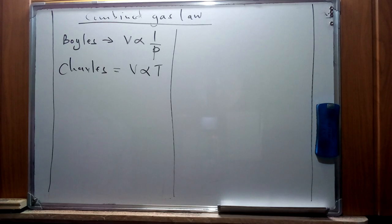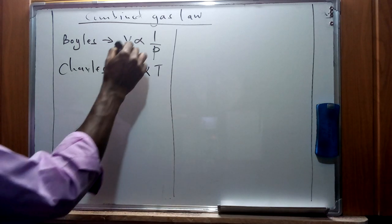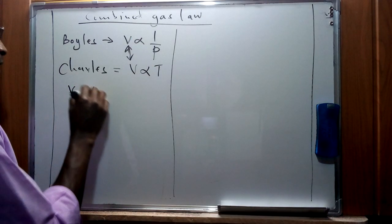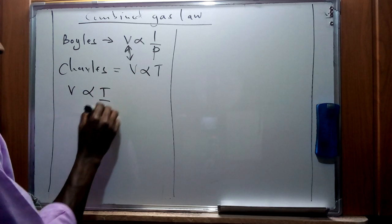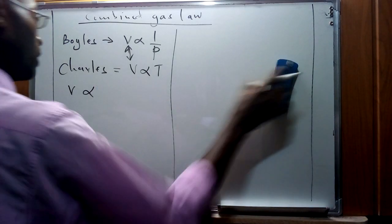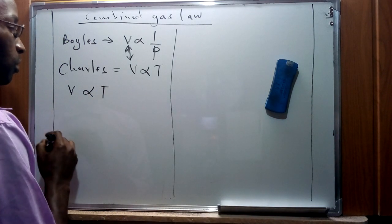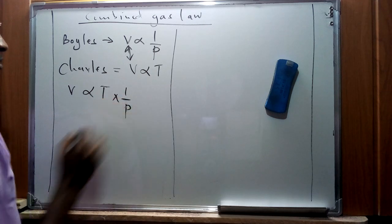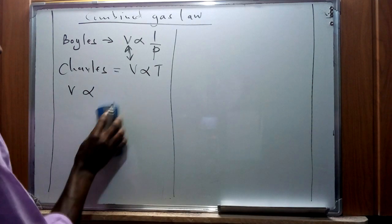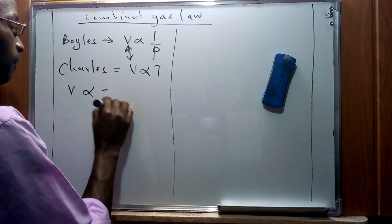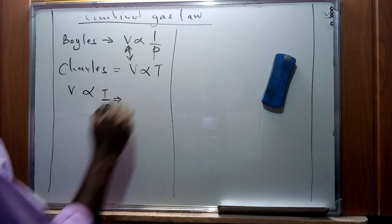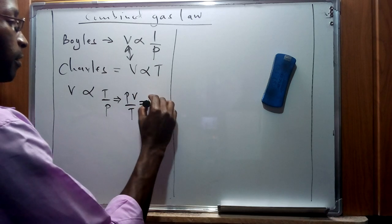A combination of these two laws gives us the concept of the combined gas law. From the two expressions, we can say that volume is directly proportional to temperature but inversely proportional to pressure. This gives us a combined equation: volume is proportional to T over P, which we can write as PV over T equals a constant.